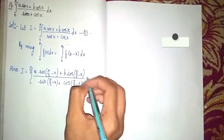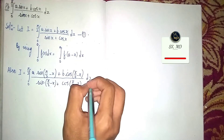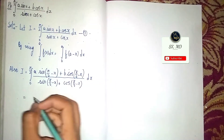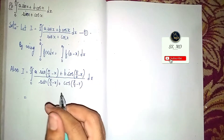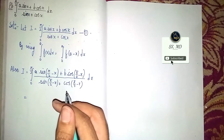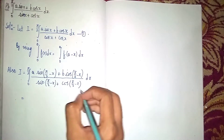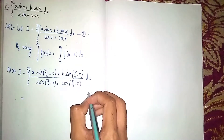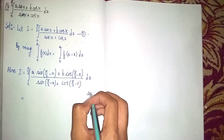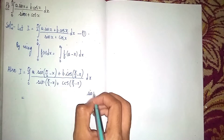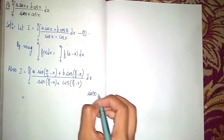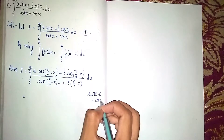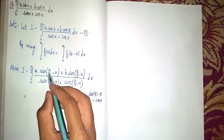Now we are using the 10th class trigonometry property: sin(90° - θ) = cos θ. We apply this to simplify the substituted expression.